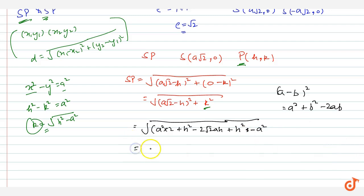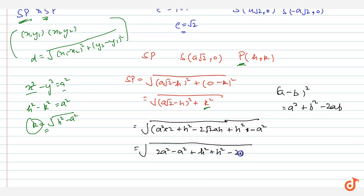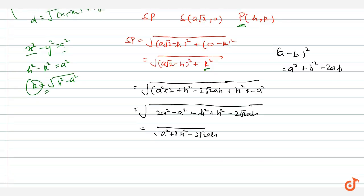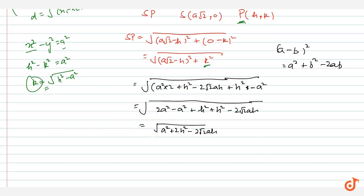Simplifying: 2a² − a² = a², and h² + h² = 2h², so SP = √[a² + 2h² − 2√2·ah]. This can be recognized as √[(a − √2·h)²], giving SP = a − √2·h in simplified form.